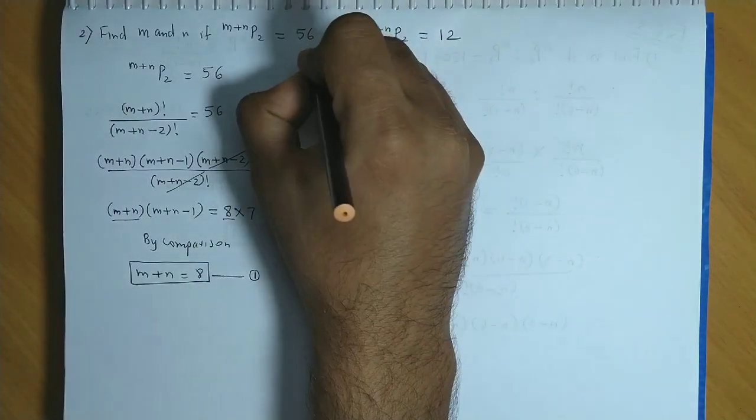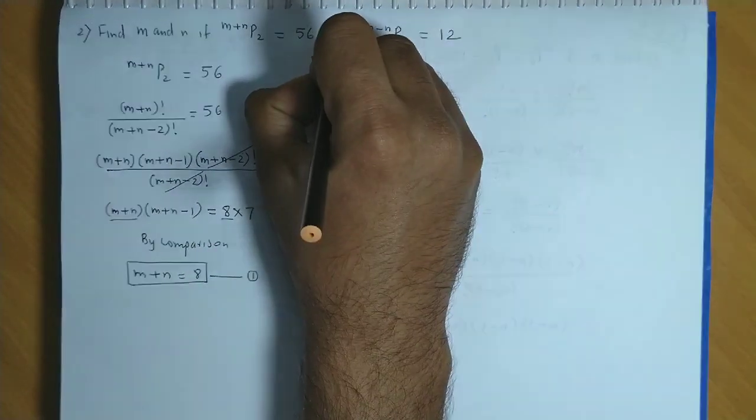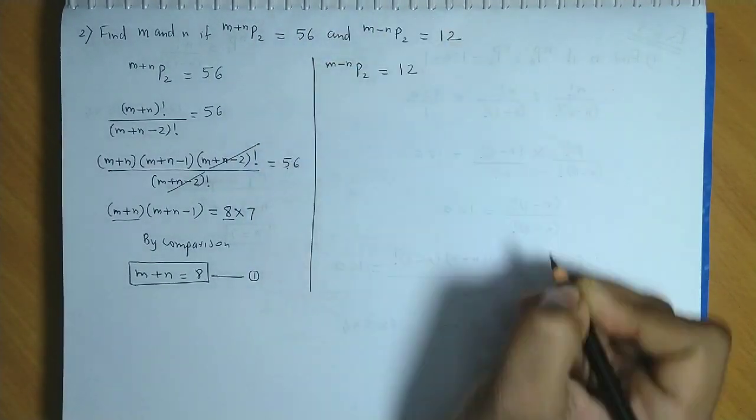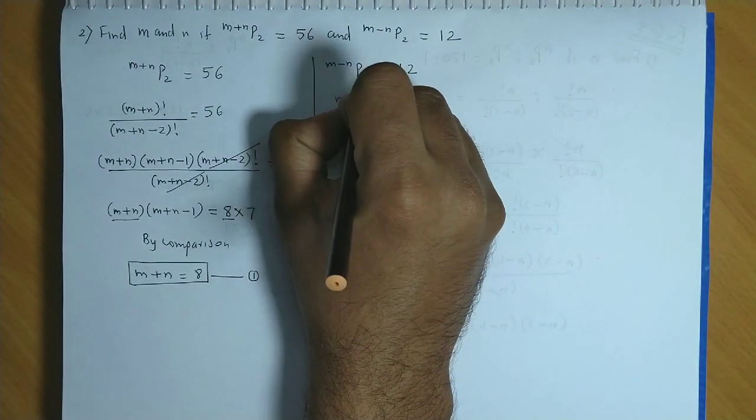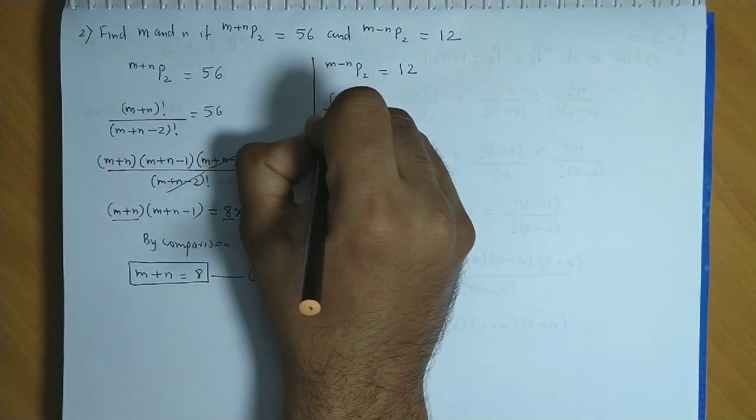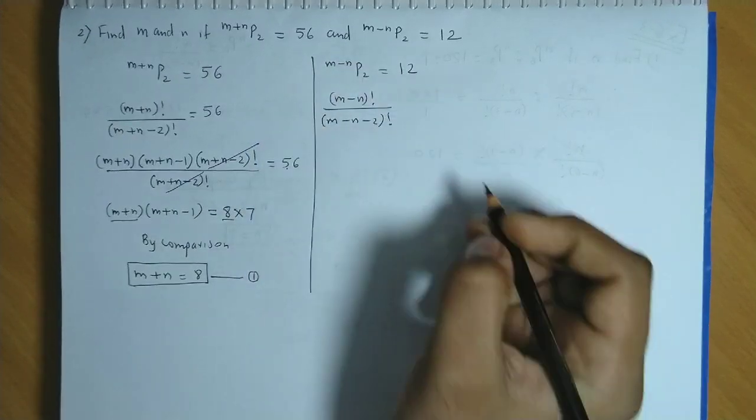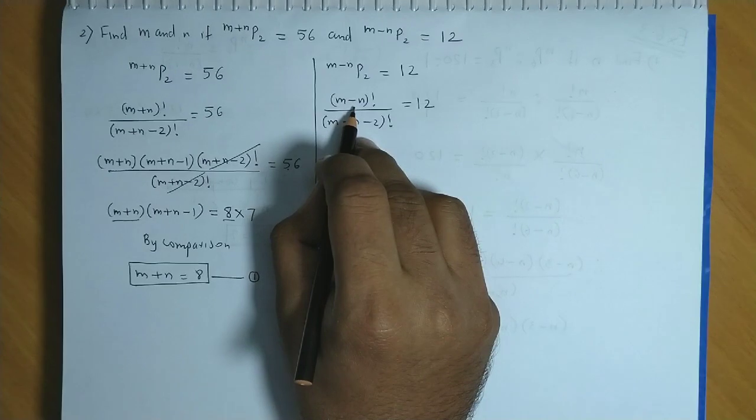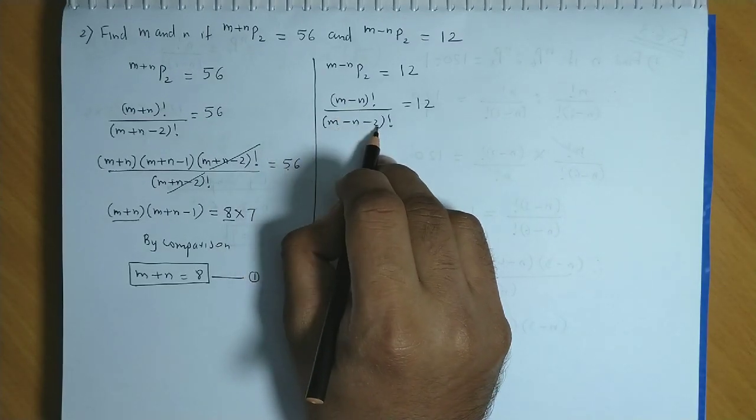Now we take second permutation. That is, m minus n P2 is equal to 12. Again using NPR formula, we have m minus n factorial divided by m minus n minus 2 factorial is equal to 12. Now we have m minus n factorial. Now we split m minus n minus 2 factorial.